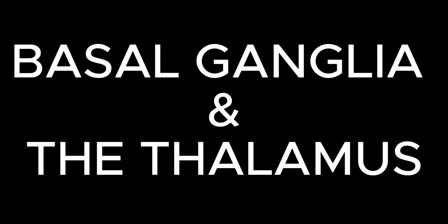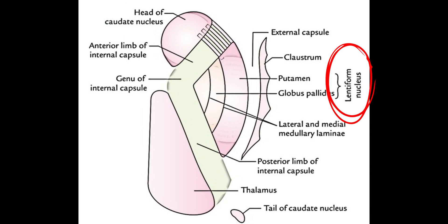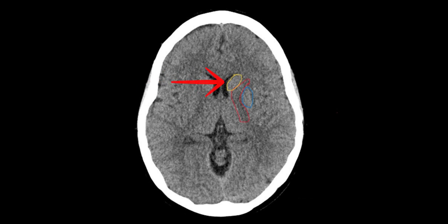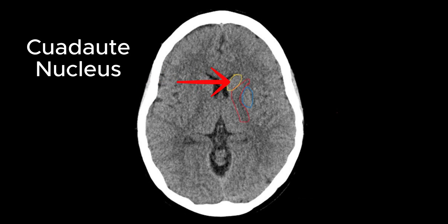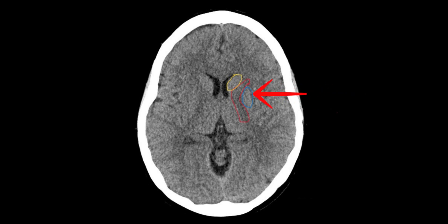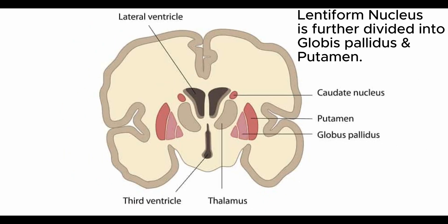These nuclei consist of basal ganglia and the thalamus. The basal ganglia is further divided into caudate and lentiform nucleus by the anterior limb of the internal capsule. This here, lying anterior to the internal capsule, is the caudate nucleus, and this one lying laterally is the lentiform nucleus, further divided into globus pallidus medially and putamen laterally.